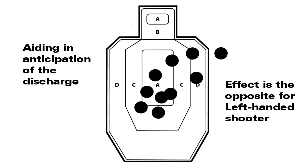Sample target number seven. Probable causes: number one, aiding the anticipation of the discharge. As the sear releases at the end of the squeeze, the palm or heel of the right hand is pushed forward slightly, causing the sights to go up and to the right. The effect is the opposite for a left-handed shooter.